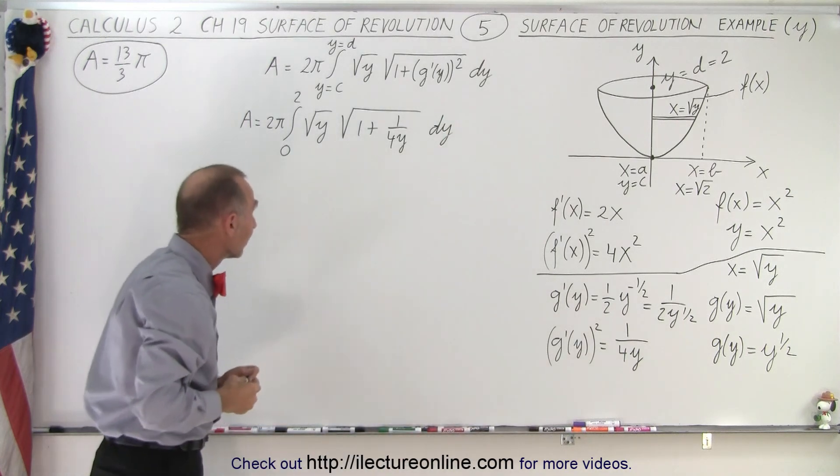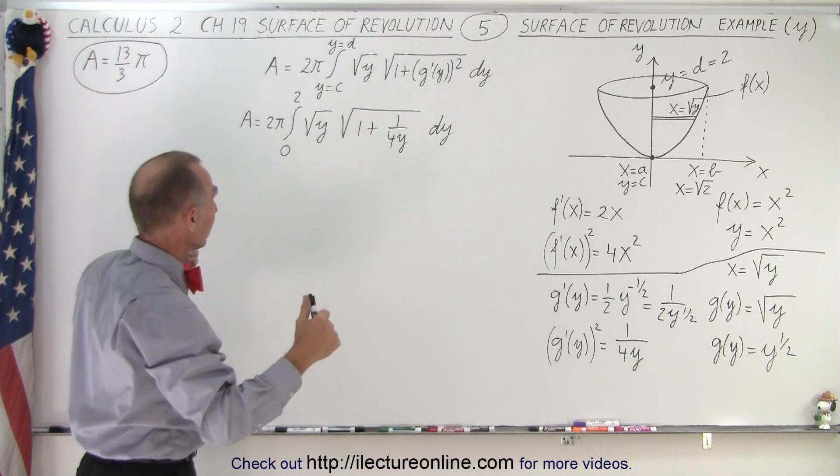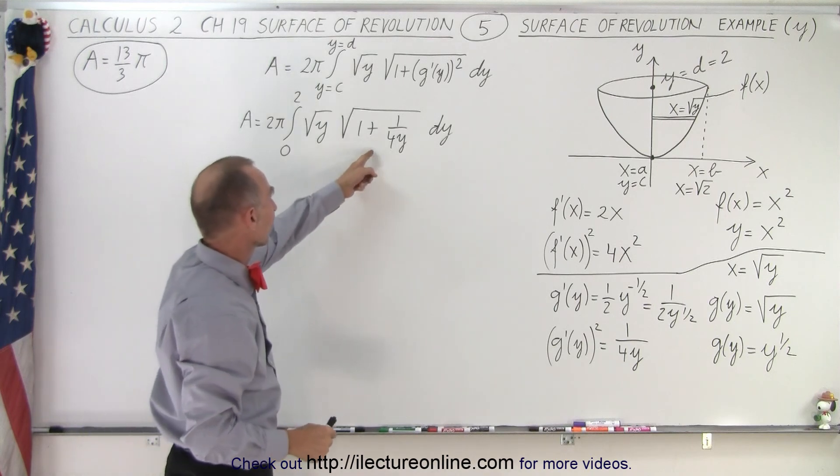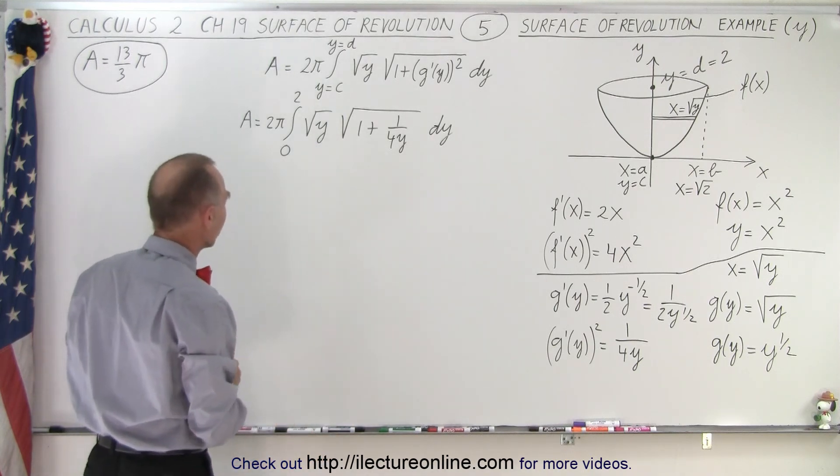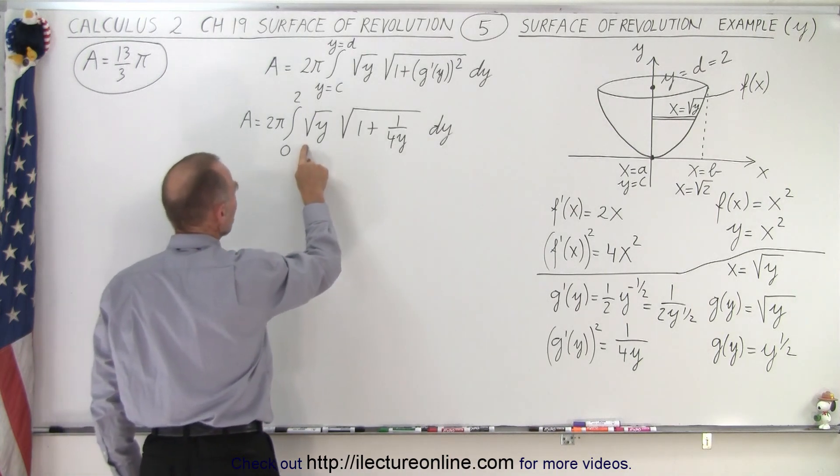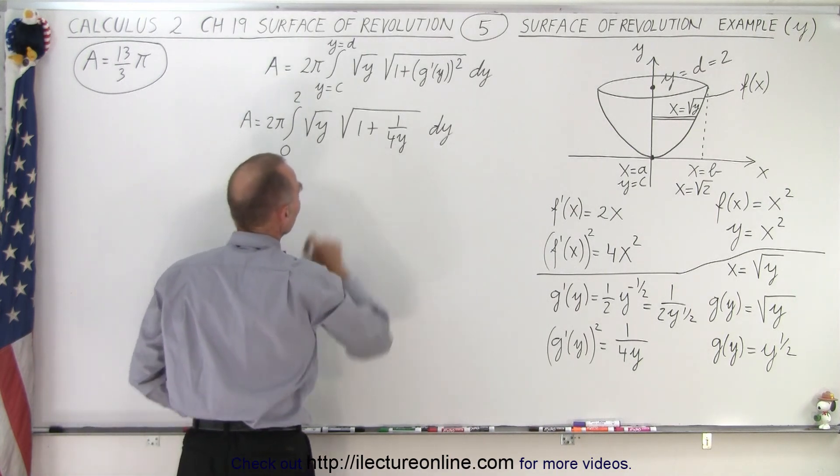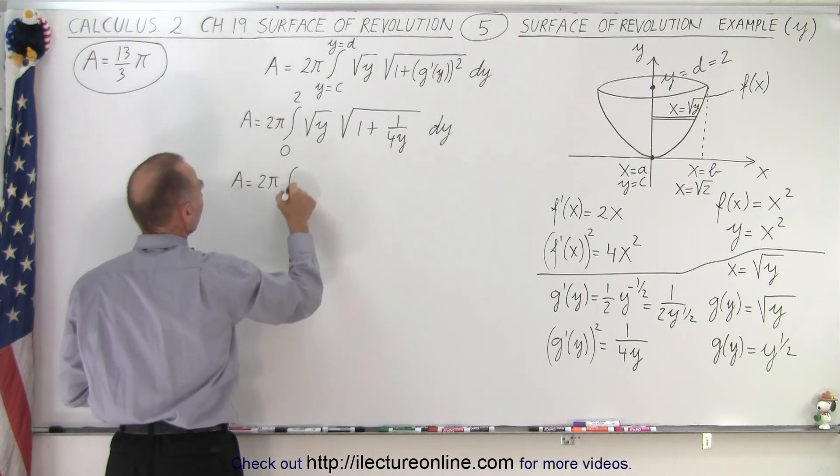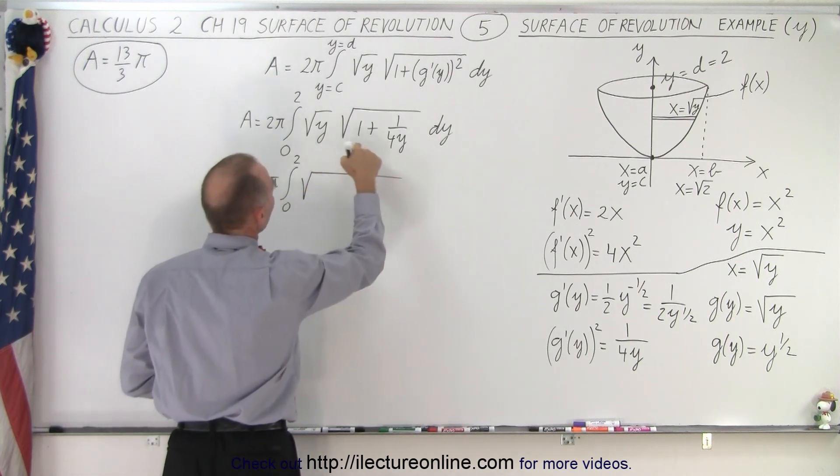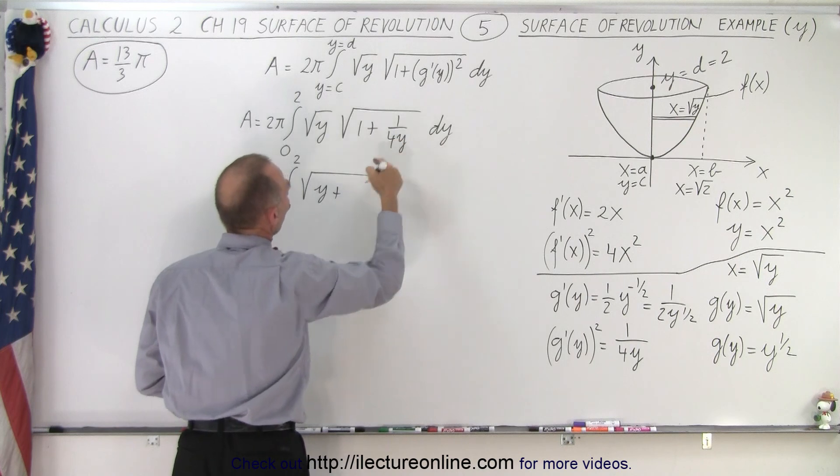Now at this point you take a look at that and go, I don't know how to integrate that, because what's the differential of this, and do I have the proper differential, but try something. How about if we take the square root of y and multiply that inside this radical. So that means we get A equals 2 pi times the integral from 0 to 2 times the square root of y times 1, that's y, plus y over 4y, that gives me 1 over 4, times dy.